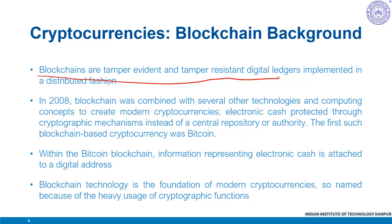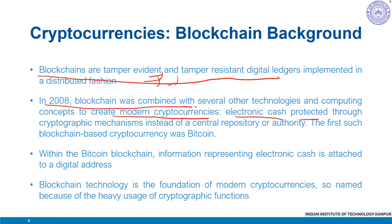They enable a community of users to record transactions in a shared ledger within that community, such that under normal operation of the blockchain network, no transaction can be changed once published — it's like an immutable chain. In 2008, this blockchain idea was combined with several other technologies and computing concepts to create what we call modern cryptocurrencies, or electronic cash protected through cryptographic mechanisms instead of a central repository like a central bank.